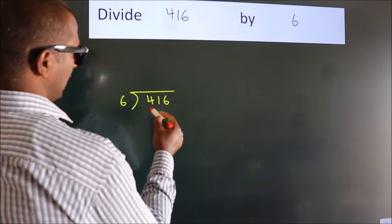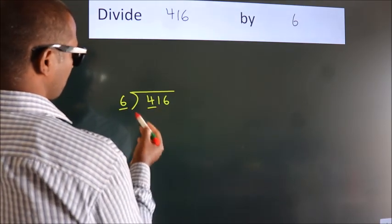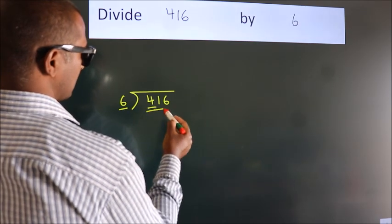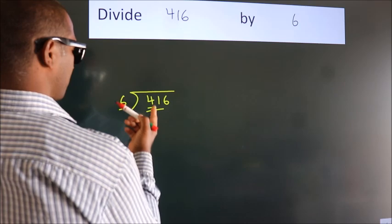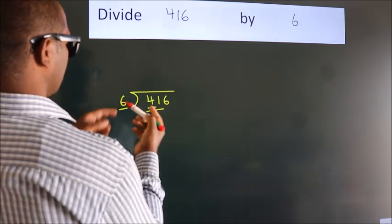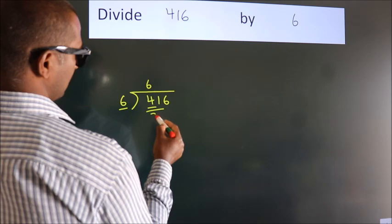Here we have 4, here 6. 4 is smaller than 6, so we should take two numbers: 41. A number close to 41 in the 6 table is 6 sixes, 36.